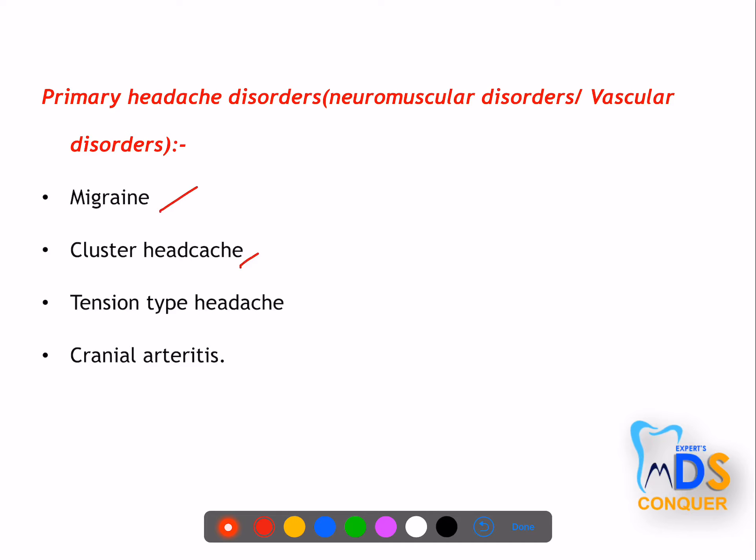Headache disorders include migraine, cluster headache, tension-type headache, and cranial arteritis. Migraine can occur with or without aura, and is usually unilateral. Ergotamines and 5-HT blockers can be given to treat migraine.